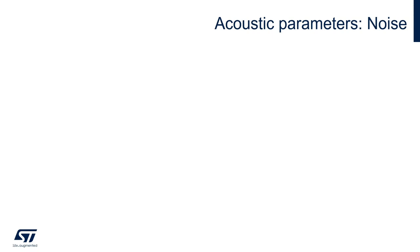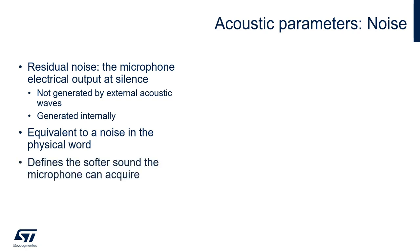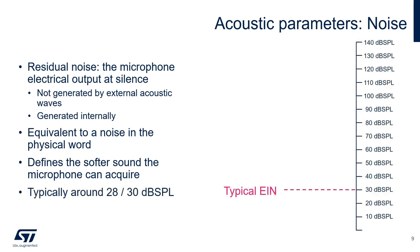On the opposite side, we have a measure of the residual noise of the microphone. This is the intrinsic noise generated internally by the microphone, and it's present even if the device is in a completely silent environment, such as a fully isolated anechoic chamber. This noise, despite being internal, can be converted to an equivalent noise as if it would be present in the physical world. We will measure this noise in dB SPL. It defines the level of the quietest sound in the real world we can acquire, which will be discernible from the microphone internal noise. The typical equivalent input noise for a digital MEMS microphone is around 30 dB SPL.